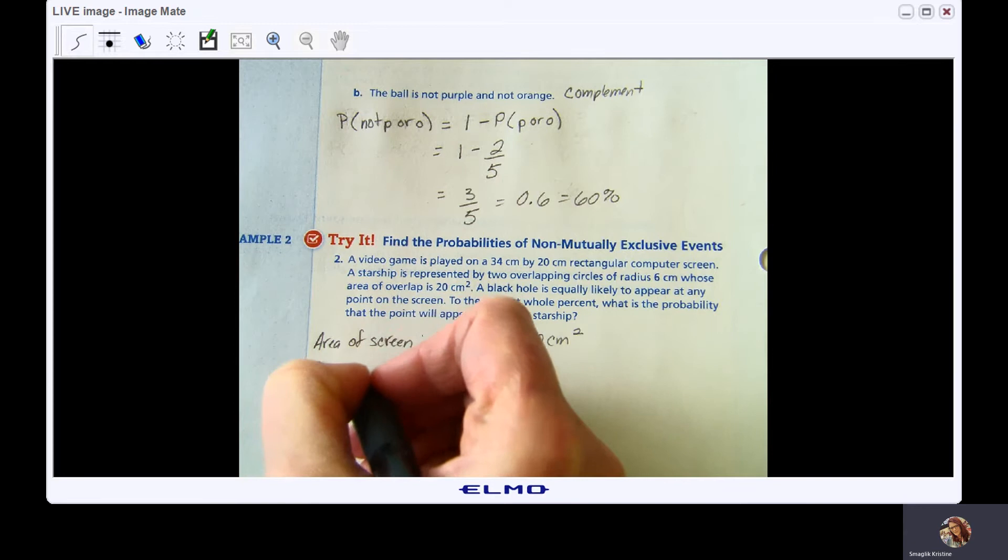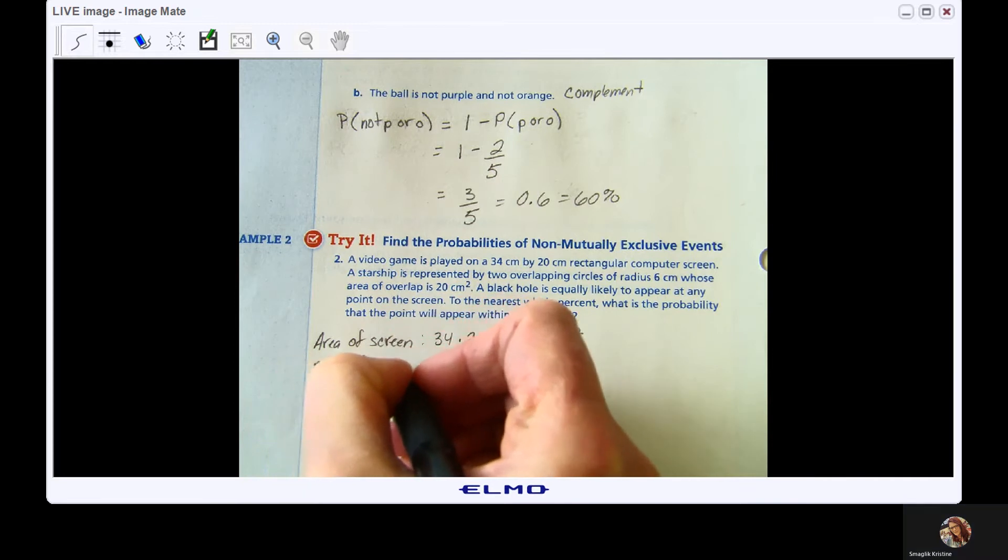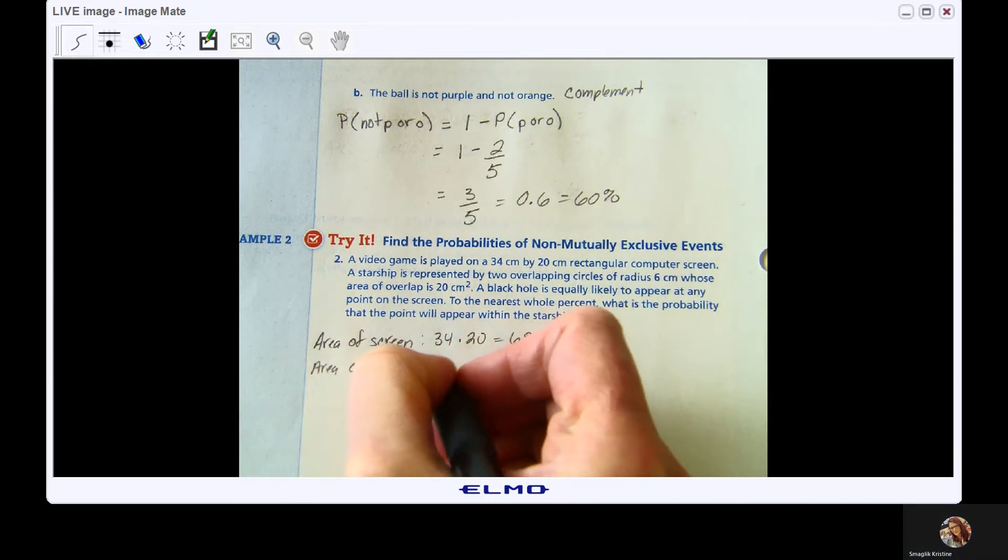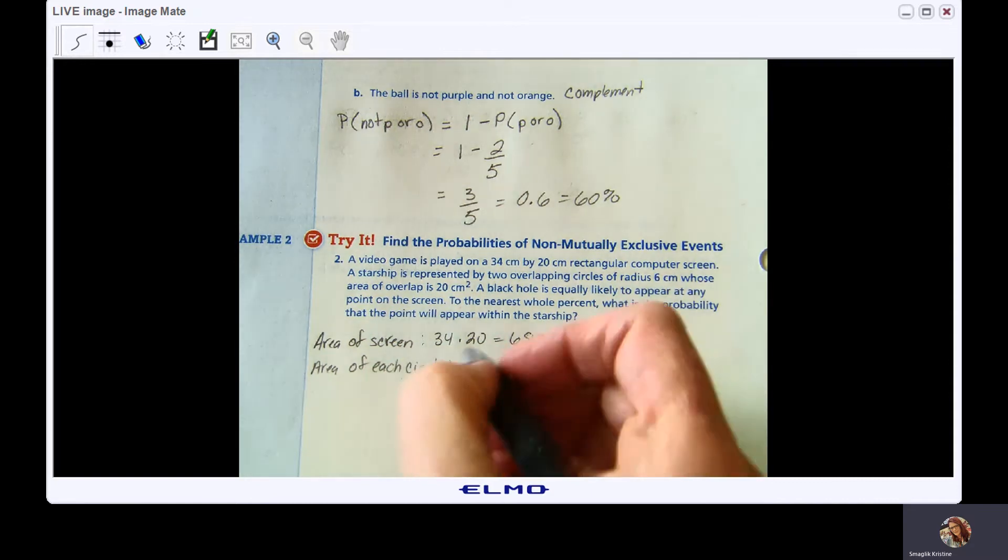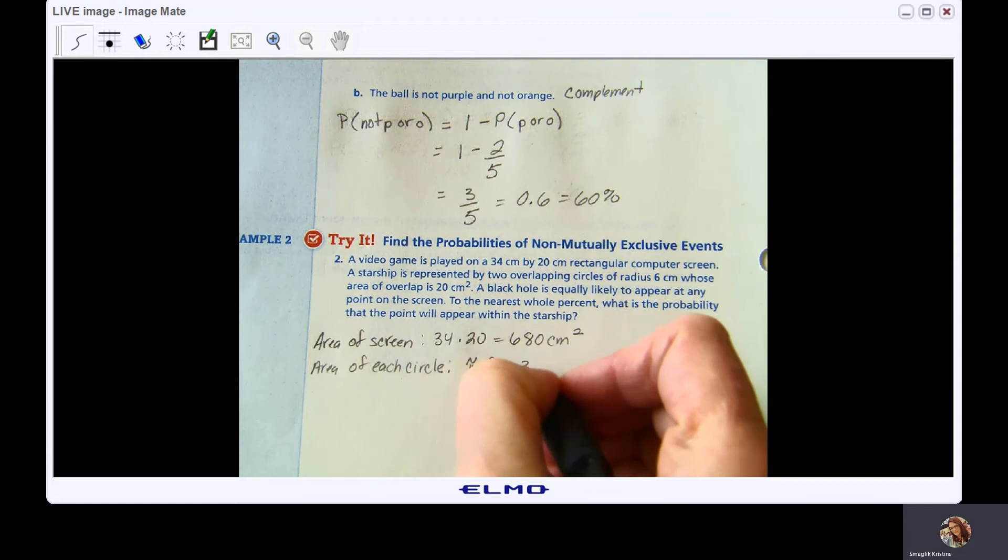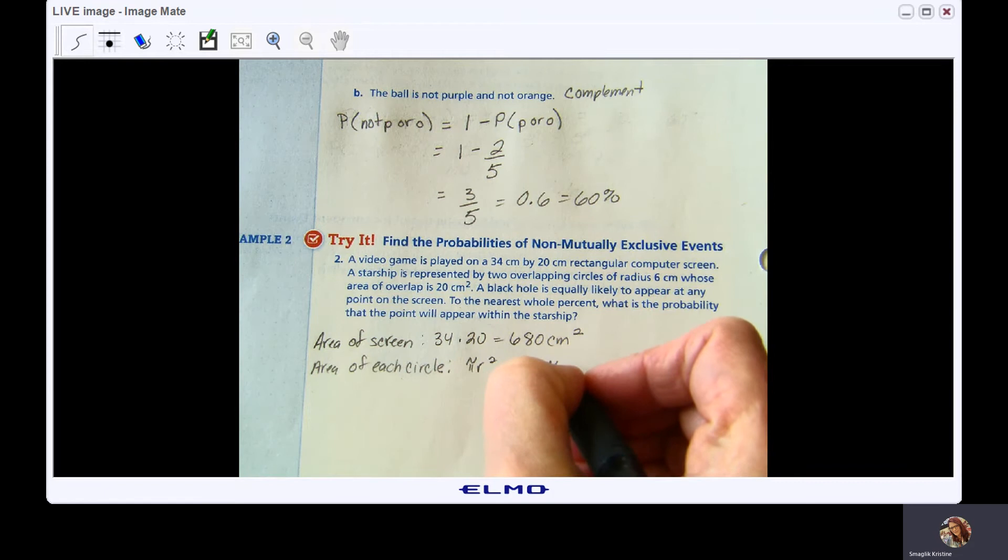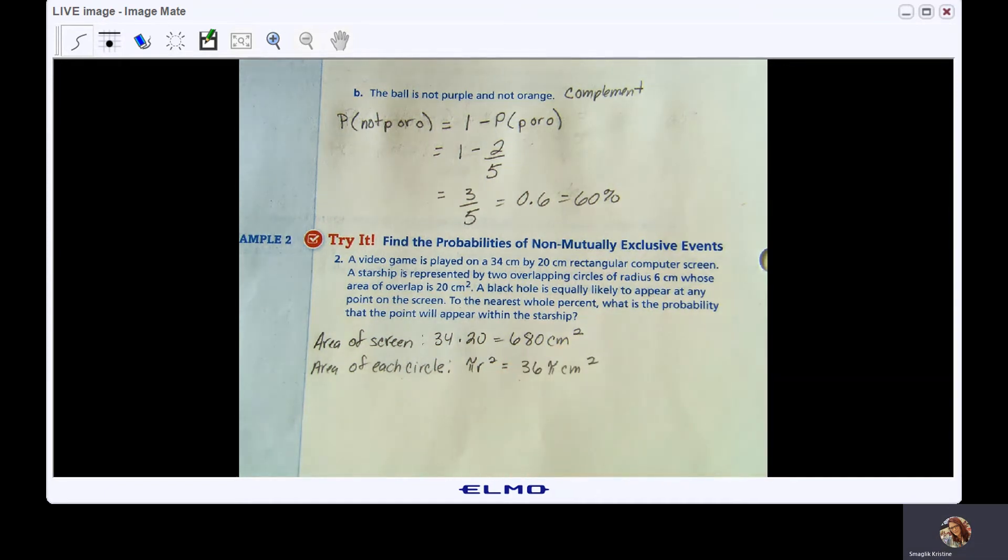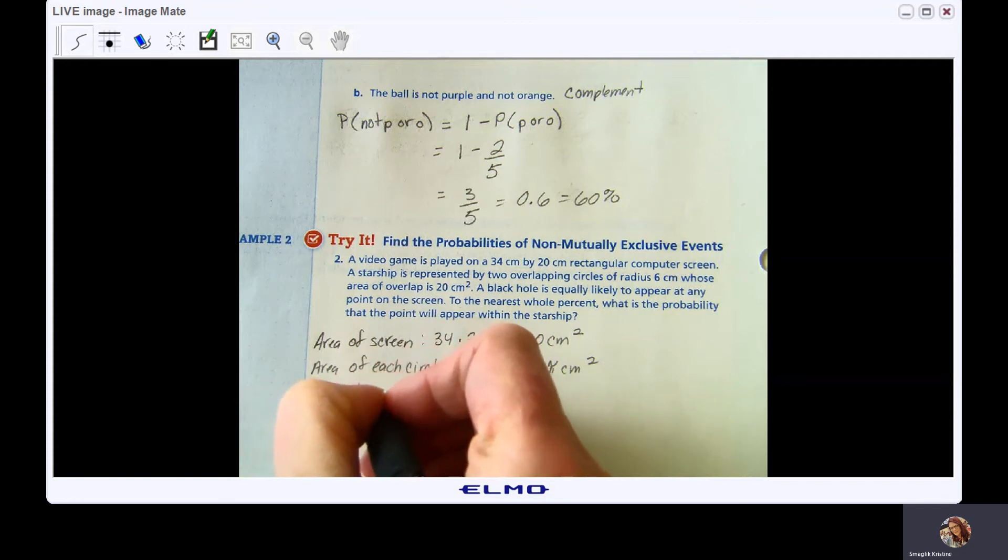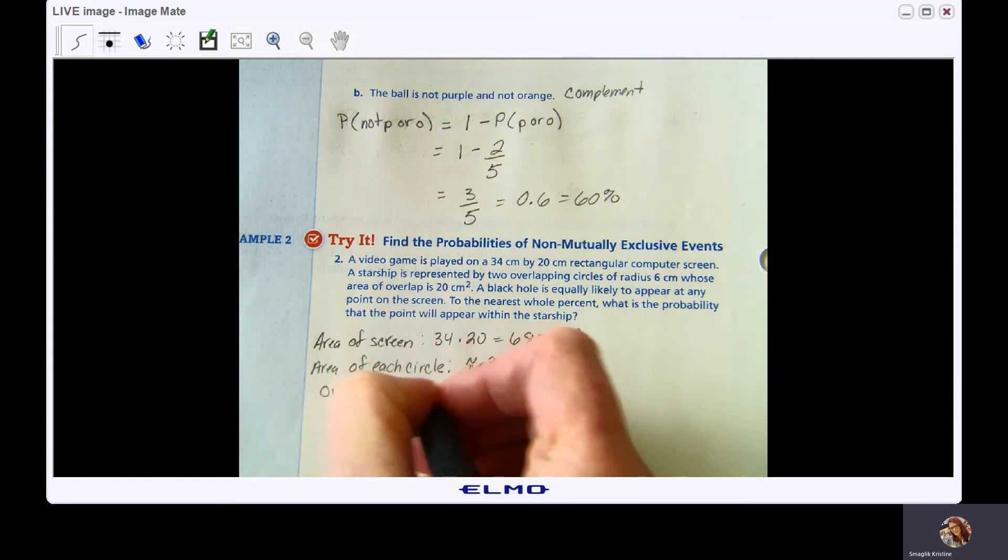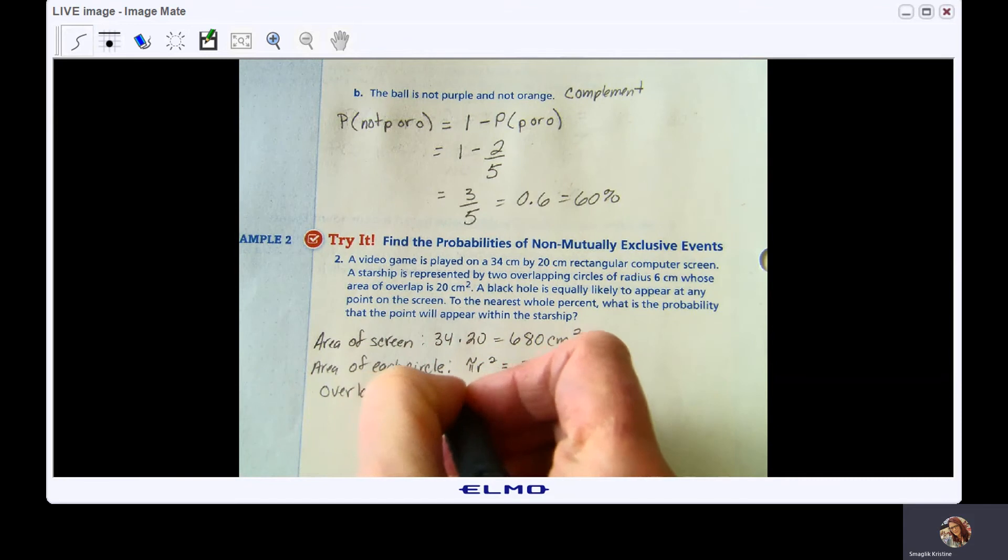The area of each circle, area of a circle is πr², so that is 36π cm squared. And then your overlap, they already gave you that area. Overlap is 20 cm squared.